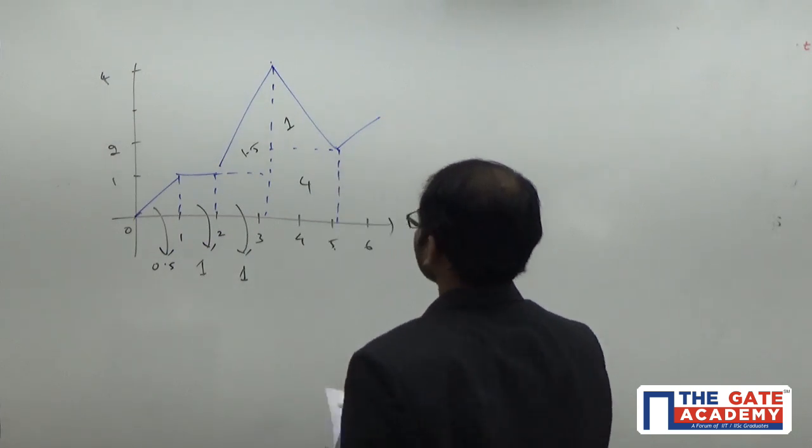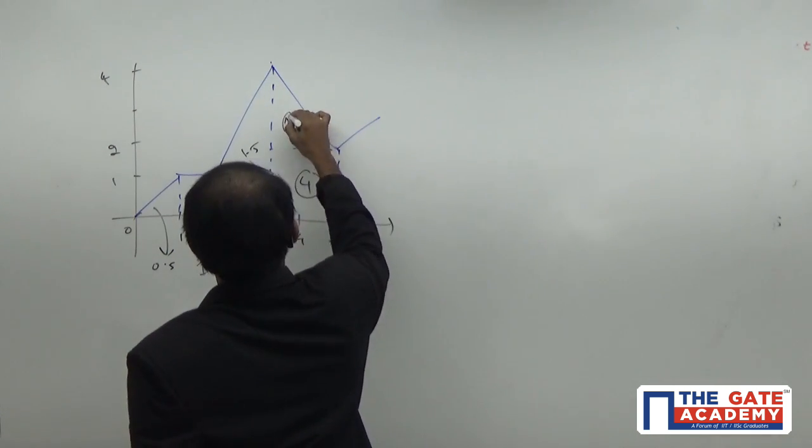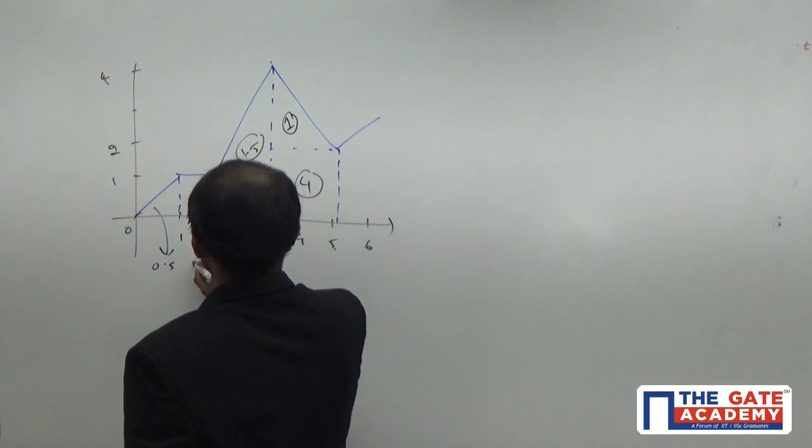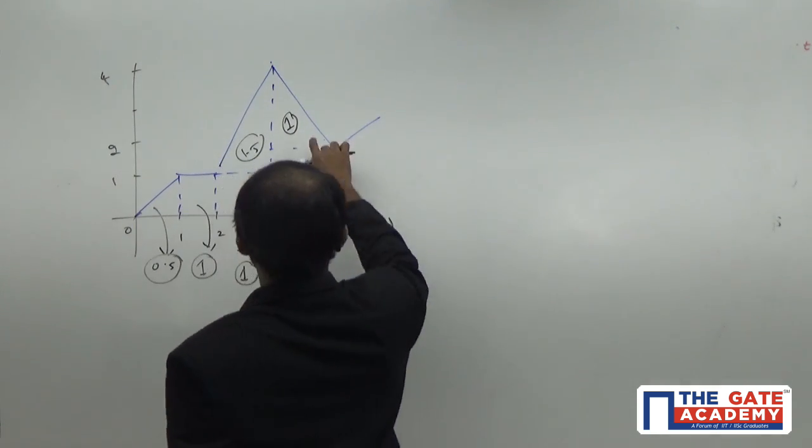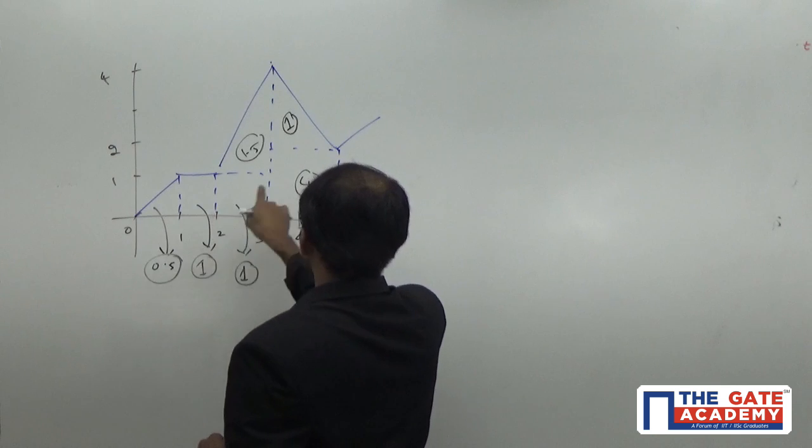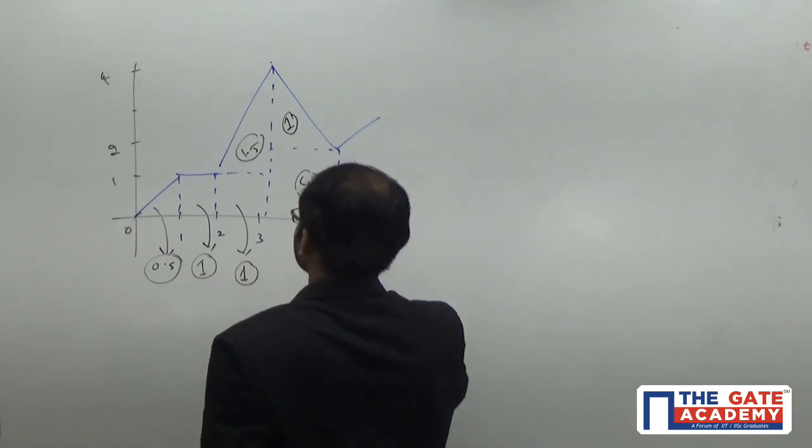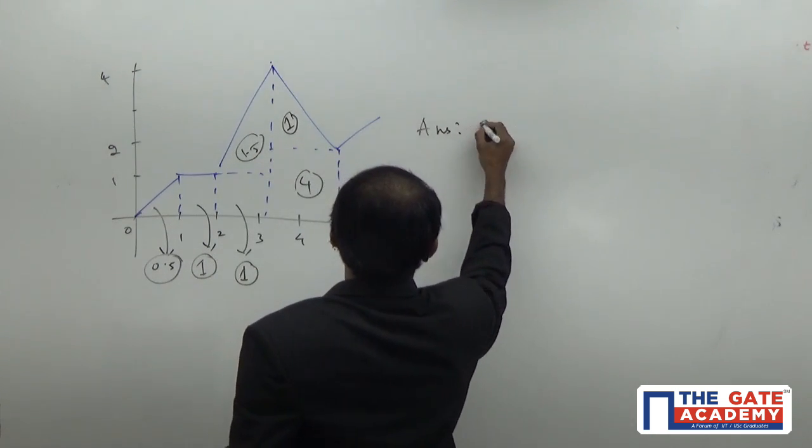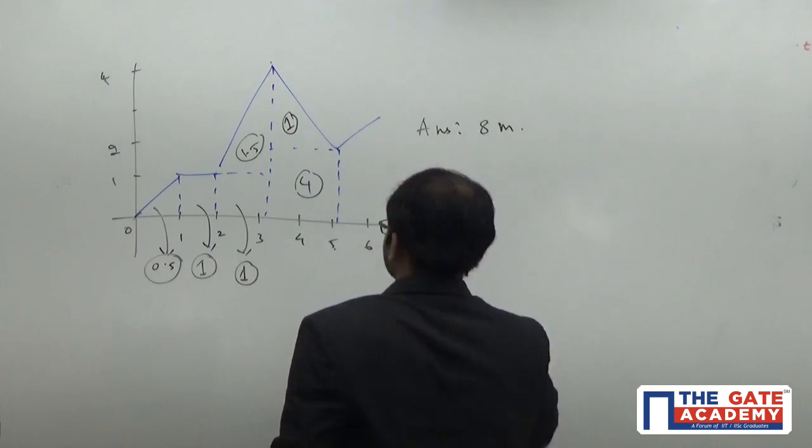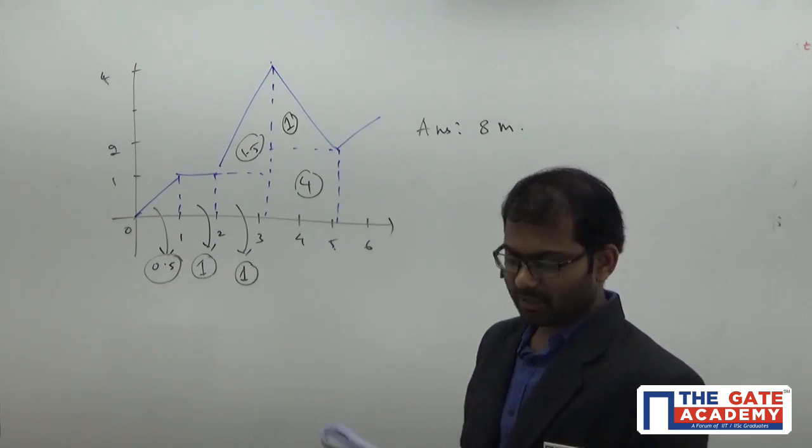So, finally, the answer will become 1 plus 1 plus 1.5 plus 1, 1 and 0.5. So, 4, 5 and both will add up to 2, 4, 5, 6, 7, 8. So, the answer will be 8 meters. The answer will be 8 meters.